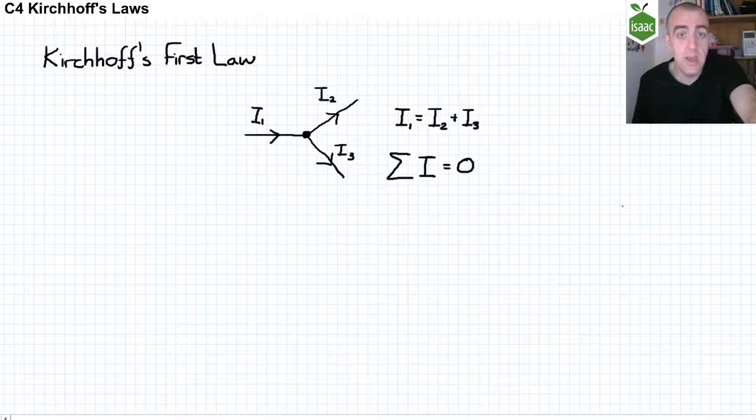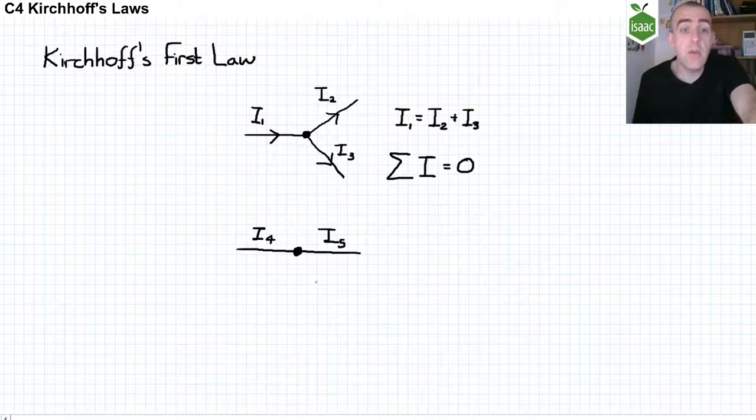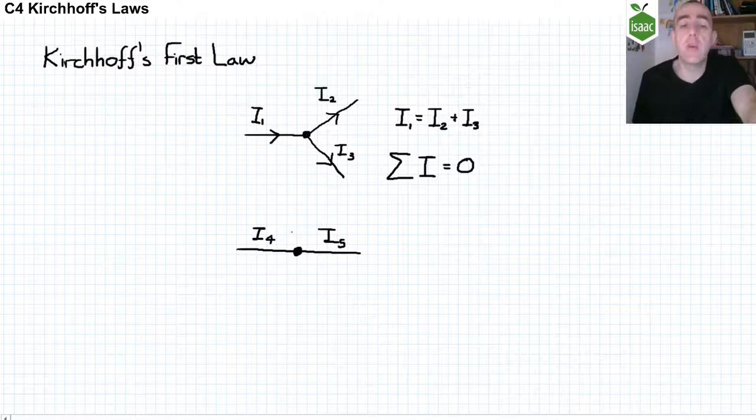If I have two wires connected with a junction like this, then as there is only one wire in and one wire out, then the current in I4 must be equal to the current in I5 to make sure that the sum of all the currents of this junction are zero.